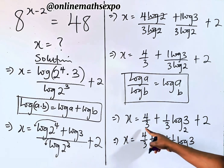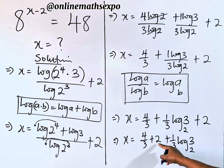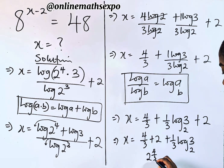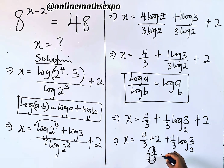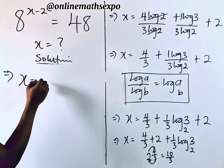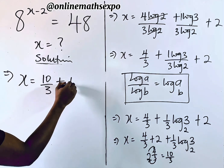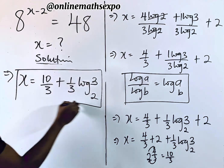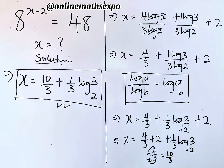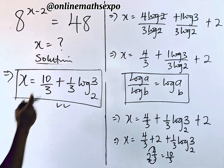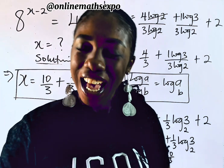Let's add the constants: 4/3 plus 2 equals 2 and 4/3. Using a common denominator of 3: 2 × 3 = 6, plus 4 gives 10, so 10/3. Therefore x equals 10/3 plus (1/3)·log base 2 of 3. That is the simplified value of x.